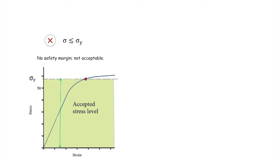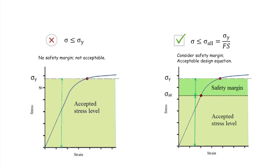So instead of using sigma smaller than sigma_y — in other words, instead of saying the acceptable stress level is below sigma_y — we are going to stay away from that boundary with a certain safety margin. We say that everything below the allowable stress is safe. We are introducing a new concept called allowable stress. Any stress above that is not failing yet, but it is not safe anymore. To be safe, we want to stay below the allowable stress limit. Allowable stress is simply defined as yield stress divided by the factor of safety. This method is called the method of allowable stress.